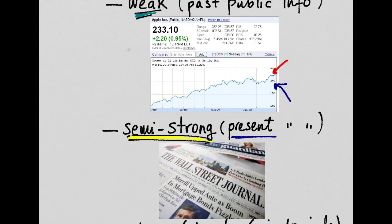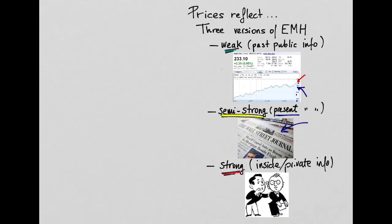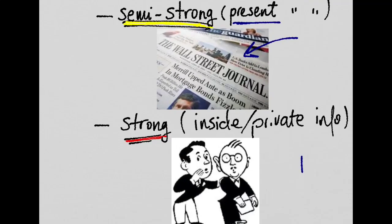The second version says that this price also reflects all the present publicly known information about the company — think about stuff being published today in the Wall Street Journal that's affecting the price now. The third, strongest version of the Efficient Market Hypothesis says that prices also reflect information that is not known to the general public — that is, they reflect private information, things that are only known inside the company.